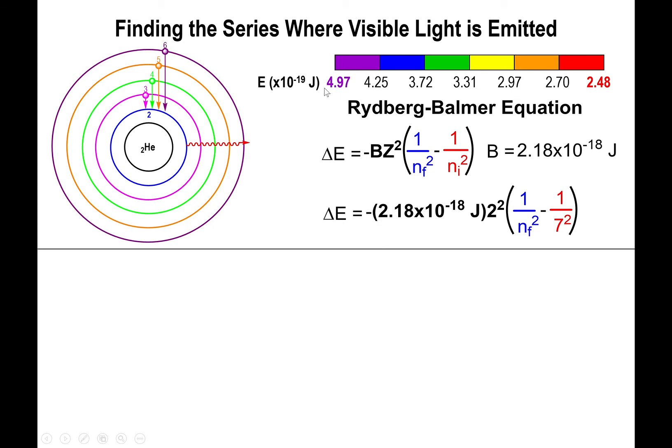Specifically, I'm going to concentrate on the fact that the upper limit of visible light is 4.97 × 10^-19 joules, and the lower limit is 2.48 × 10^-19 joules. For helium, we know that the atomic number is 2, so we're going to square 2 to get 4. We're going to multiply the Balmer constant by 4, and this will give a value of -8.72 × 10^-18 joules. Also notice that I have input a value of 7 for n_initial. This is a complete guess on my part.